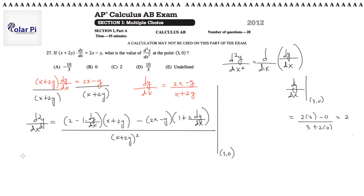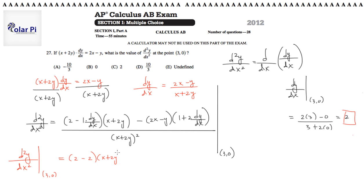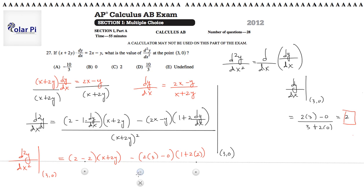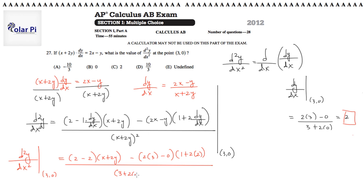Plugging in x=3, y=0, and dy/dx=2, the second derivative d²y/dx² evaluated at (3, 0) equals: 2 minus 1 times 2 — so 2 minus 2 — times x plus 2y, and then minus 2 times 3 minus 0, times 1 plus 2 times 2, all divided by 3 plus 2 times 0, squared. So the first term is 2 minus 2, which is 0, and 0 times anything is 0. Then we have minus 6 times 5, giving negative 30 in the numerator, and 3 squared equals 9 in the denominator.